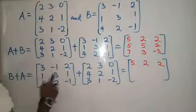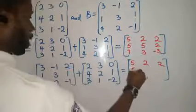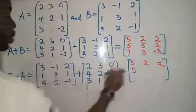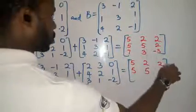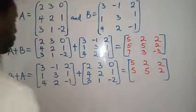Let's try the second one. 1 plus 4, 5. 3 plus 2, 5. 1 plus 1, 2. The second row is also equal to the second row.